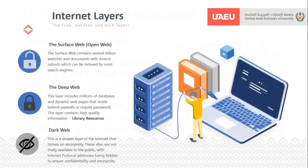Now I'll talk about Internet layers. You've probably heard of the dark web, the deep web, and the surface web — the three layers defined in the Internet. A lot of people get confused between what the deep web and the dark web are, but they're not the same. The surface web, or open web, is what you see freely on the Internet — all the free content in Google and search engines. All that information can be indexed by other search engines and harvested.